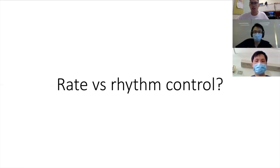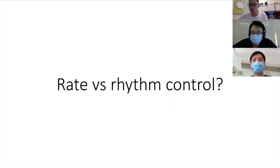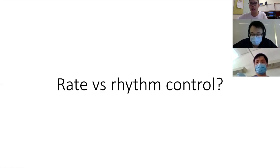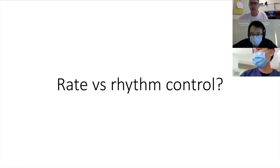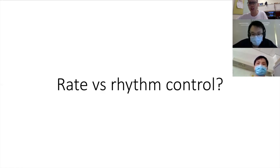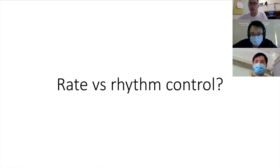Regarding rate and rhythm control — the AFFIRM trial in 2002 suggests both are acceptable. But in practice, outside the cardiology context, most people default to rate control because it's what we are familiar with. How do we decide between the two, and who actually gets rhythm control?